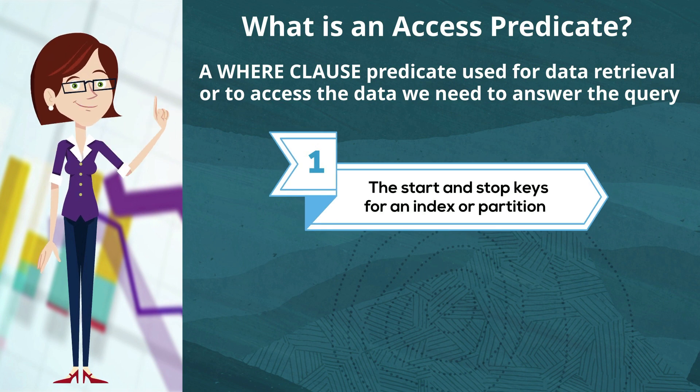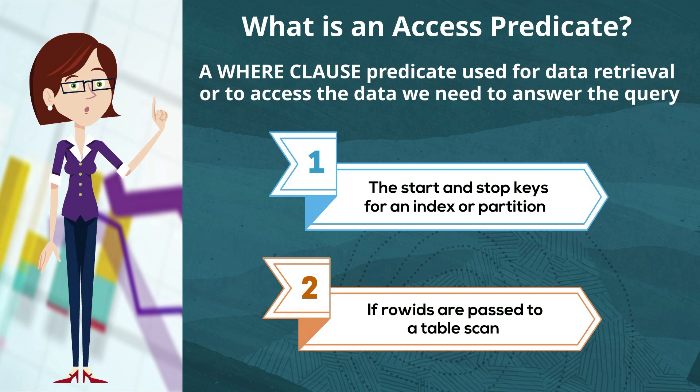If I've got something like a start or stop key for an index, or a set of partitions that I'm interested in, or if somebody passes the row ID to a full table scan, i.e., from an index lookup beforehand gives me the row IDs and then they get passed to the table scan. So that's an access predicate.